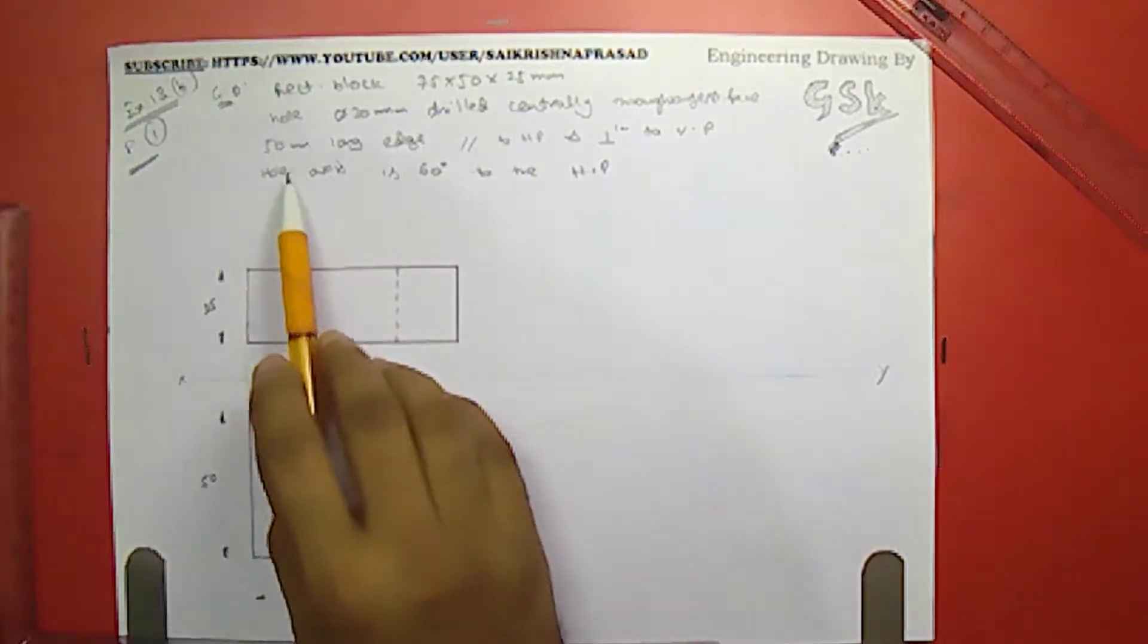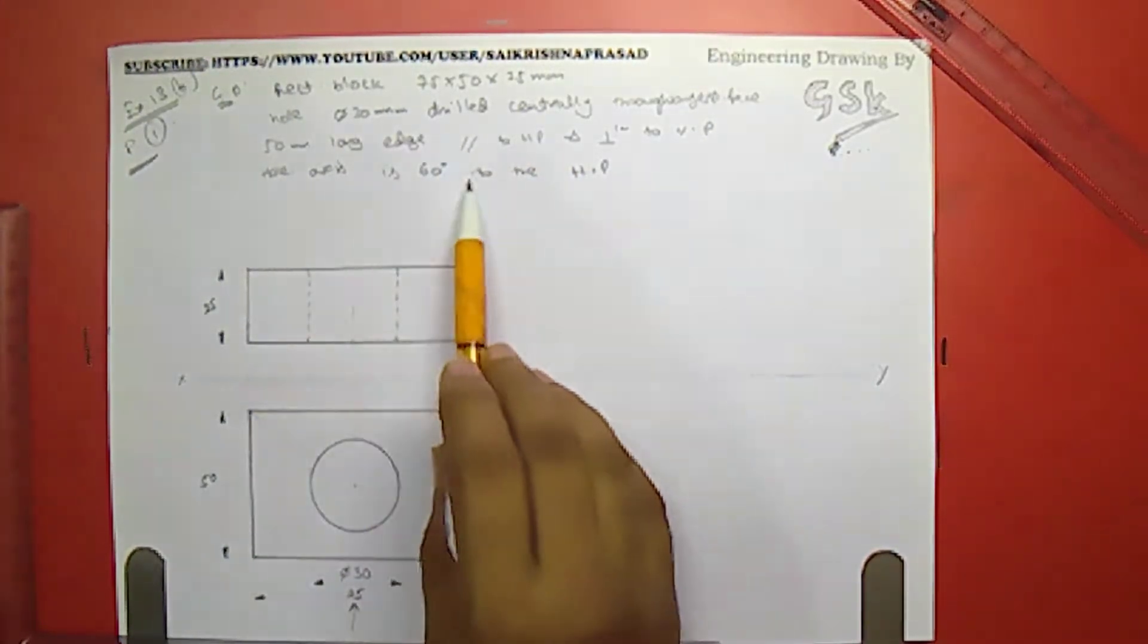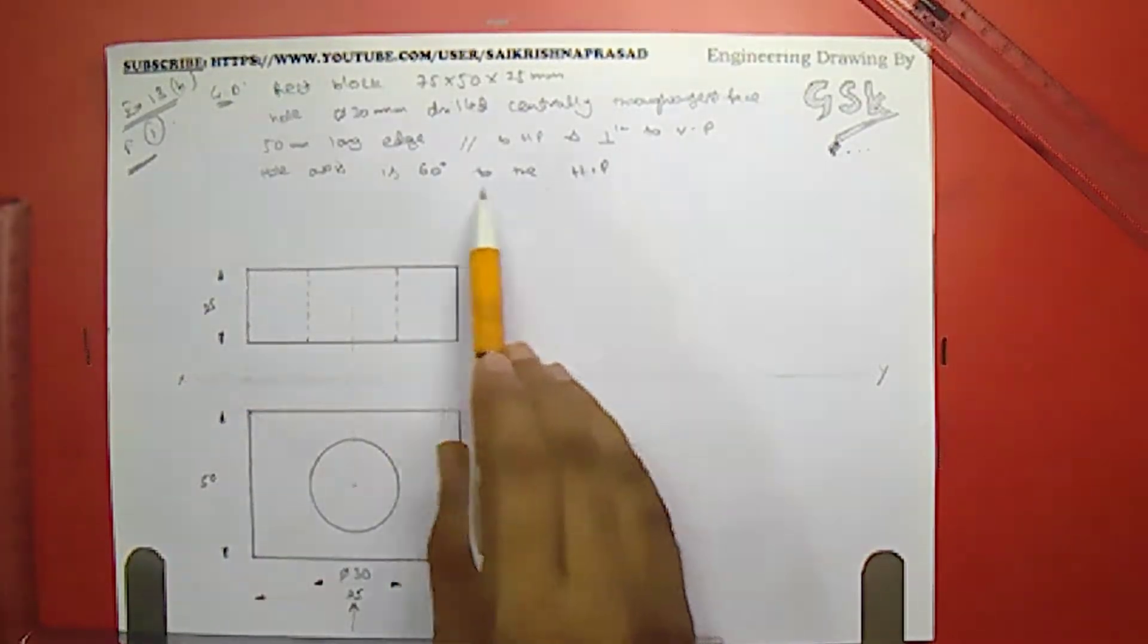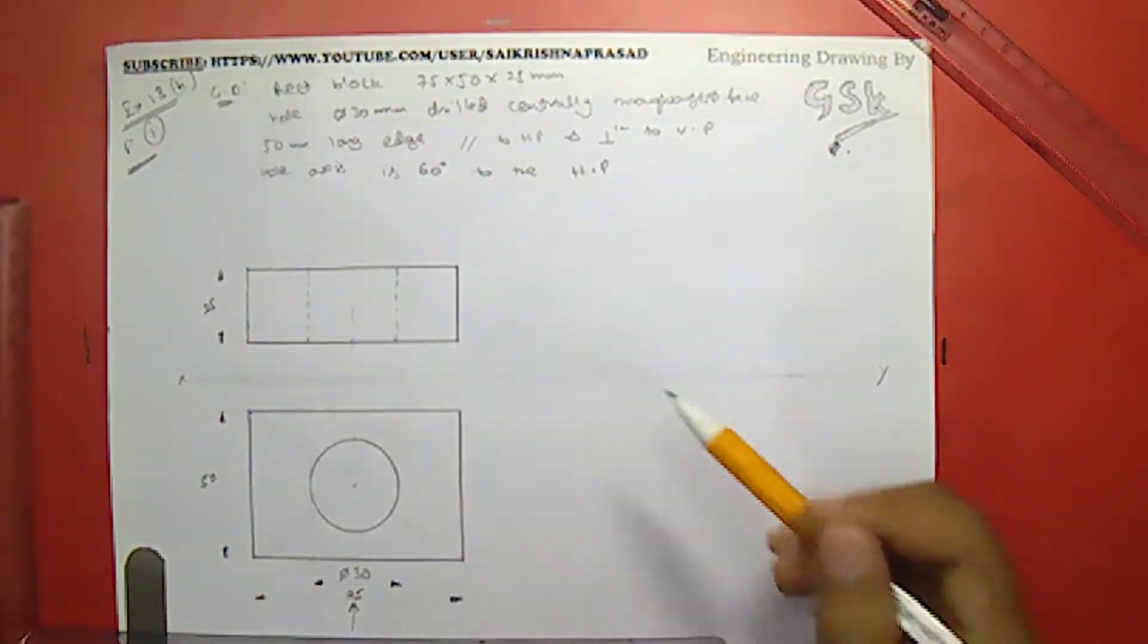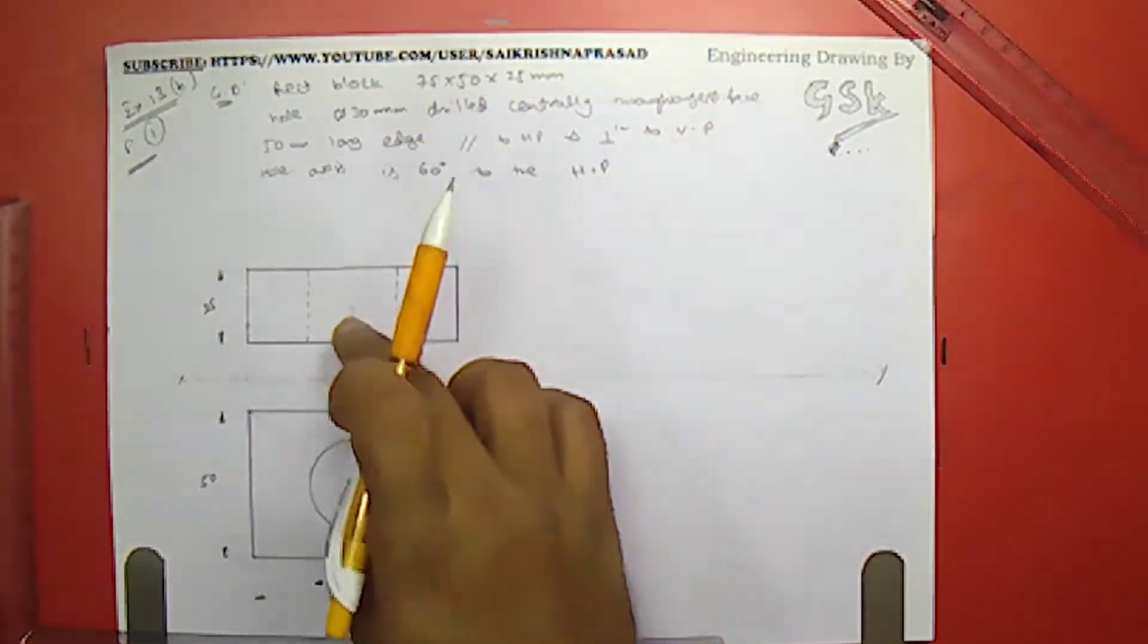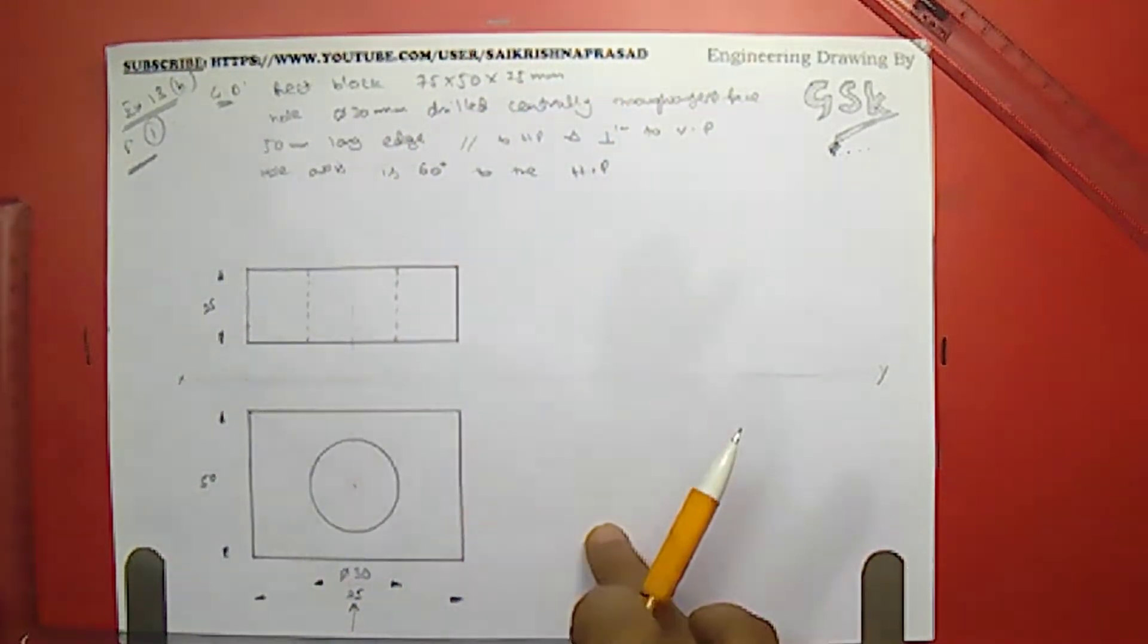Now coming to this one, the hole axis is 60 degrees inclined to the HP. Means wherever we see the angle in HP, that can be taken in front view, right? In this direction we have to draw the 60 degrees line. And we have to reproduce the same figure over here and then project this down.